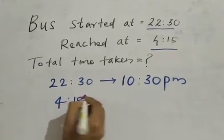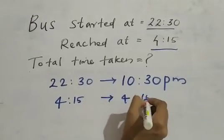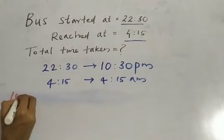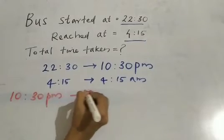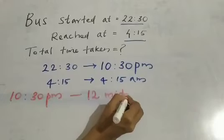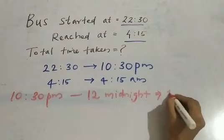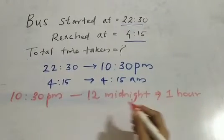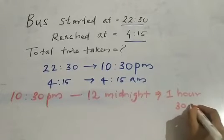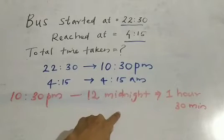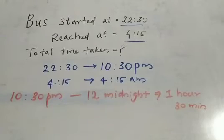And 4:15 means 4:15 AM. Now, from 10:30 PM to 12 midnight — how much time? That is 1 hour 30 minutes: 10:30 to 11:30 is 1 hour, and 11:30 to 12 is 30 minutes. So 10:30 PM to 12 midnight is 1 hour 30 minutes.